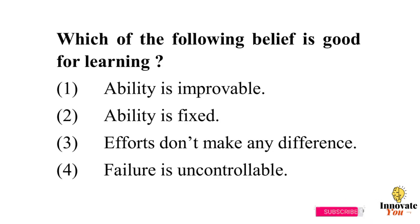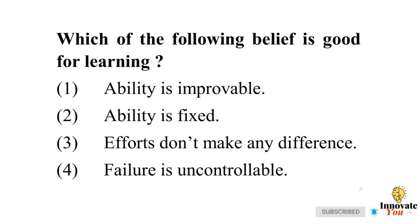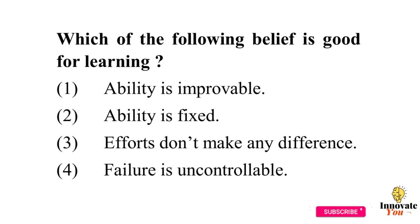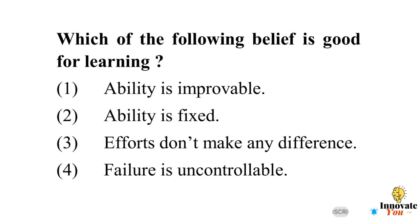Question 6: Which of the following beliefs is good for learning? Option 1: Ability is improvable. Option 2: Ability is fixed. Option 3: Efforts don't make any difference. Option 4: Failure is uncontrollable. Answer: 1 — Ability is improvable.